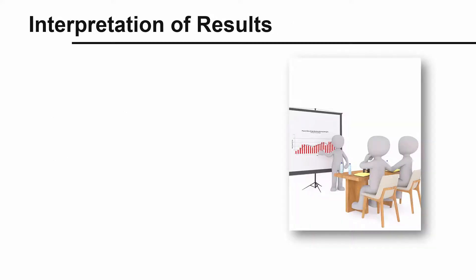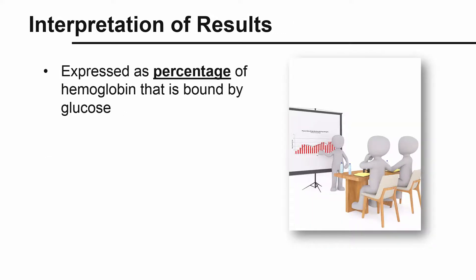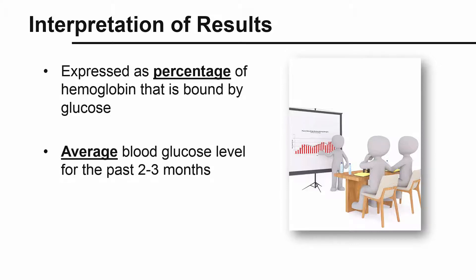What do the results indicate? A1c is expressed as a percentage of hemoglobin that is bound by glucose. It measures your average blood glucose levels for the past two to three months, since red blood cells have a lifespan of 120 days. Think of A1c as a batting average, which measures a batter's average performance. In this case, the A1c test is measuring your average blood glucose levels to see how well your diabetes is being managed.